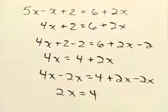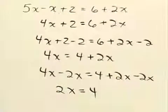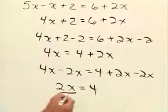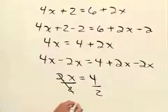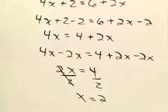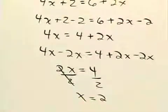And lastly we'll isolate this variable completely by dividing both sides by 2. So I'm going to divide the left side by 2 and the right side by 2. And we'll end up with x is equal to 2. So our solution is x equals 2.